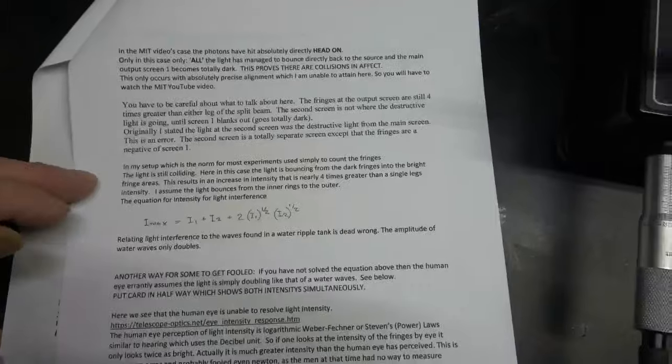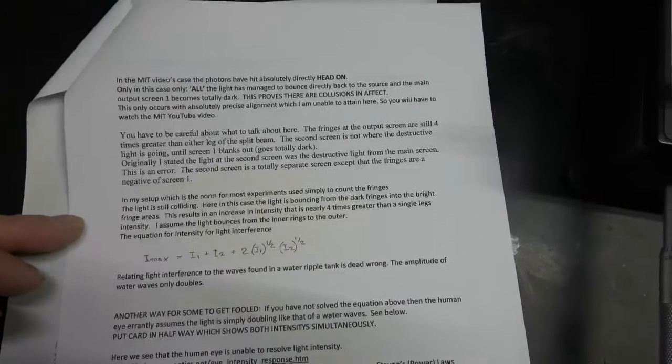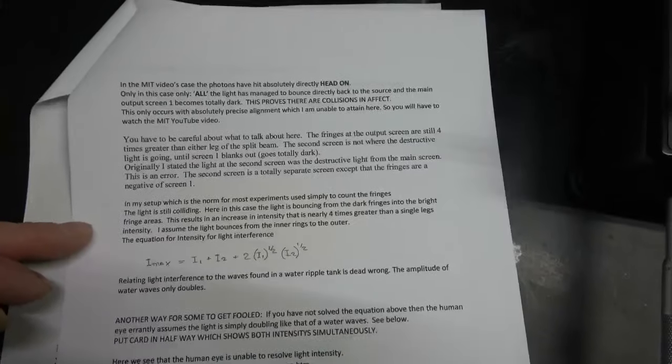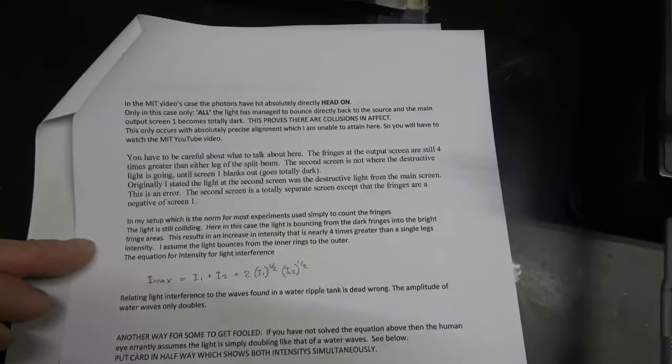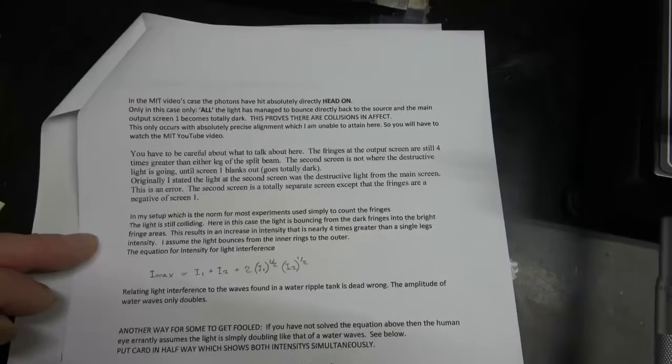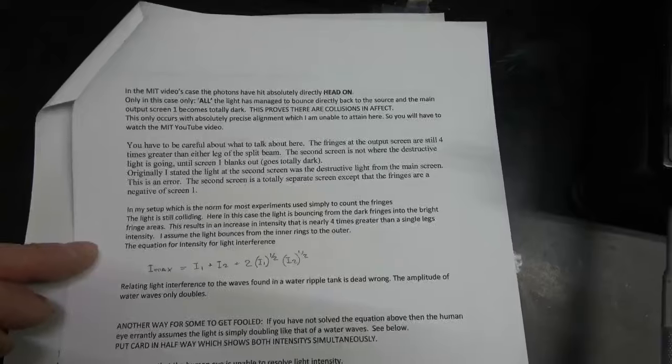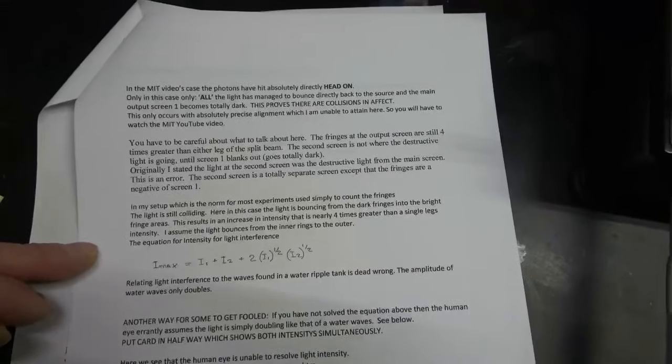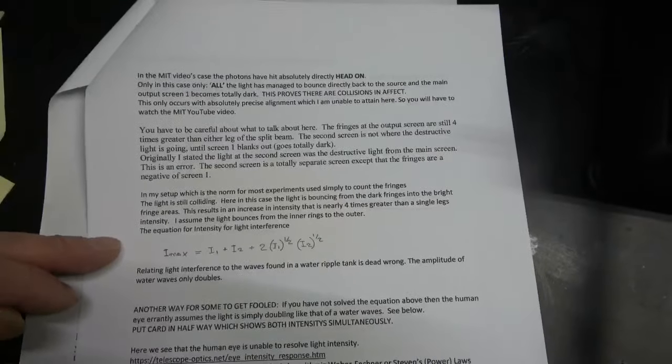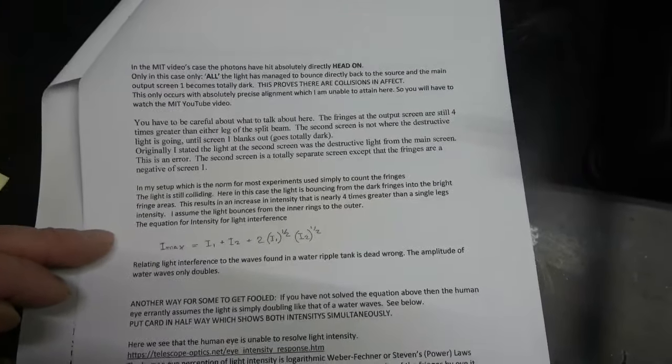In my setup, which is the norm for most experiments used simply to count fringes, the light is still colliding. Here, in this case, the light is bouncing from the dark fringe into the bright fringe areas. This results in an intensity that is nearly four times greater than a single leg's intensity. I assume the light bounces from the inner rings to the outer.